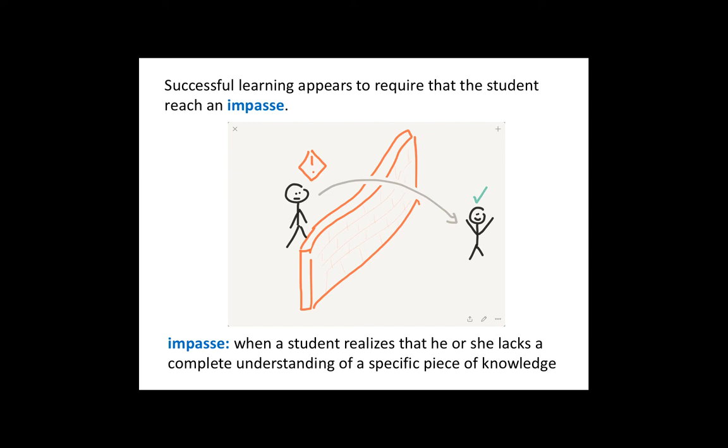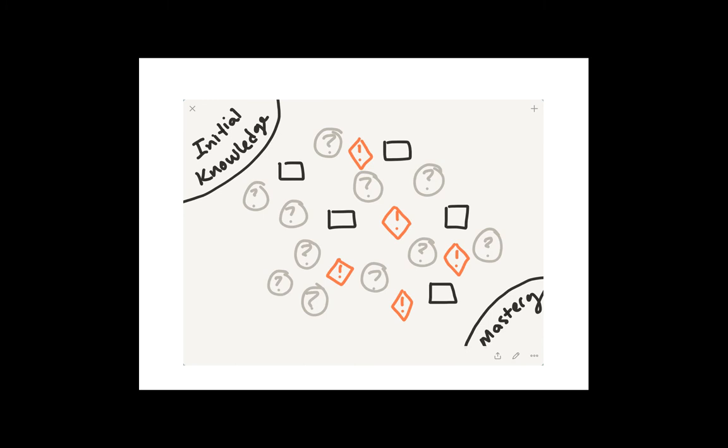Again, something hard to do in a 1 to 30 or a 1 to 100 environment. Get your whole class to impasse at the same time. Good luck with that. It's not so easy. So, software can help us with this because we can basically make a map from, like, initial knowledge to mastery of something, and we can send every student through on a path that's unique to them, theoretically.